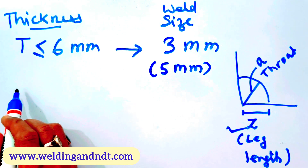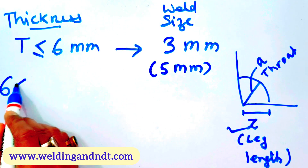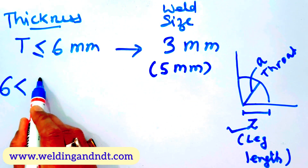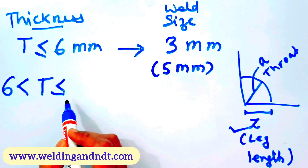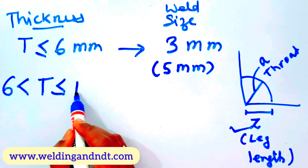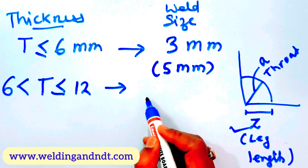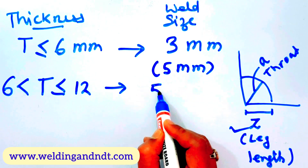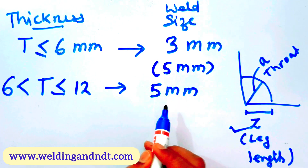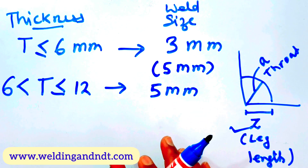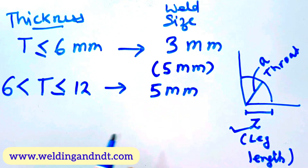The second condition: if t is more than 6 mm but less than or equal to 12 mm, then the minimum weld size will be 5 mm. Remember, this is the minimum weld size, not the maximum.